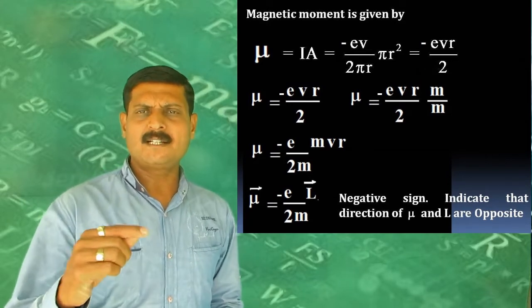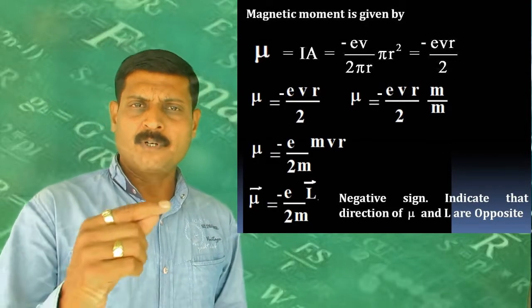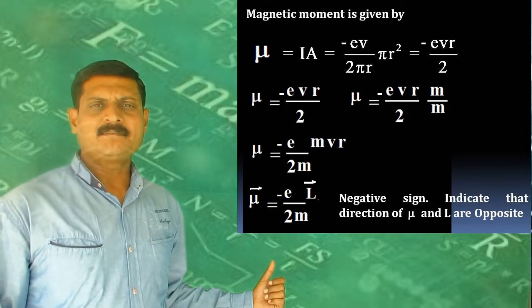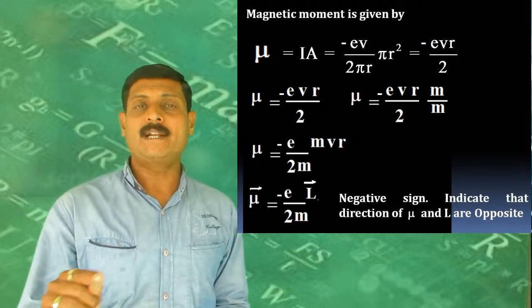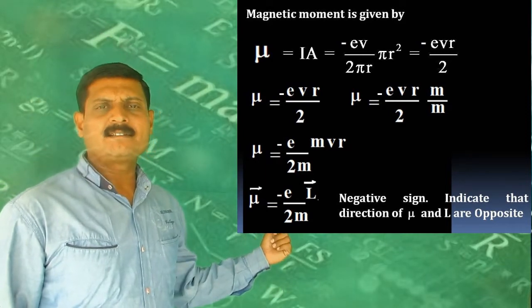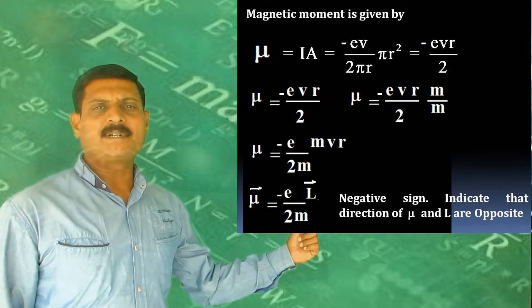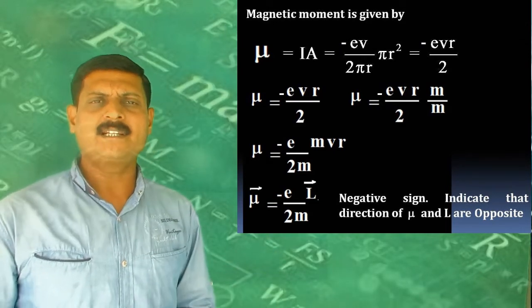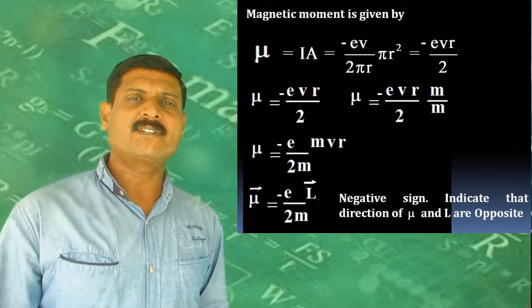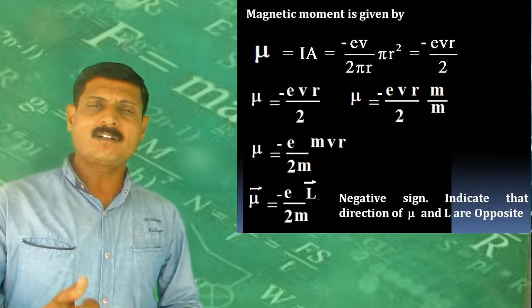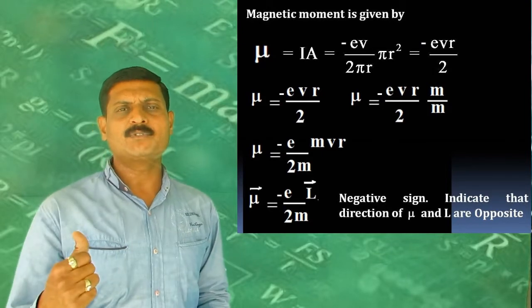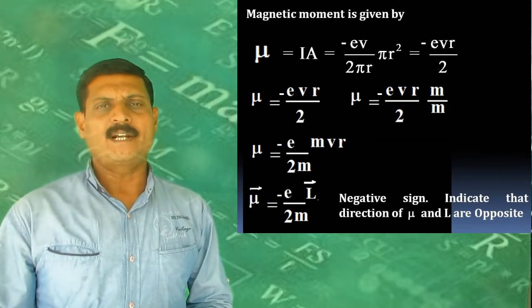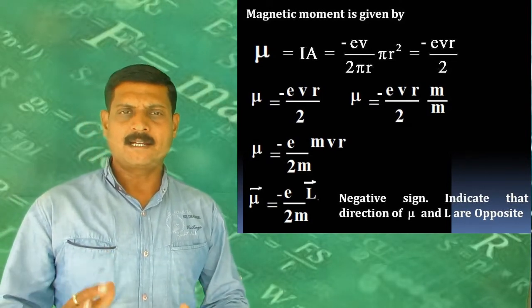Multiplying and dividing by m (mass of electron), μ = -(e/2m) × mvr, where mvr is the angular momentum L. So μ = -(e/2m) × L. Both μ and L are vector quantities. The negative sign indicates the direction of magnetic moment is exactly opposite to the direction of angular momentum, since L is an axial vector along the axis of rotation.